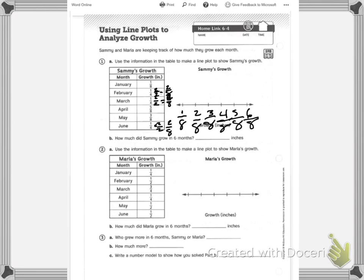So on here, I'm going to mark an X for each one. So January is 1/8th, February was 2/8ths, March was 2/8ths, April was 5/8ths, May was 3/8ths, and June was 2/8ths. So it wants to know how much it grew in 6 months.